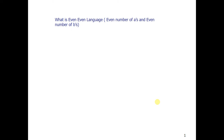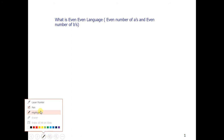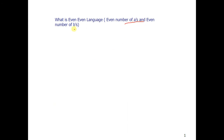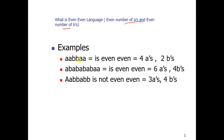Hello guys, welcome back. Today we are going to draw a finite automata for the even-even language. First of all, we need to know what the even-even language is. It is the language in which all words have an even number of A's and even number of B's. For instance, here we have a word where we can count four A's and two B's, so even number of A's and even number of B's.